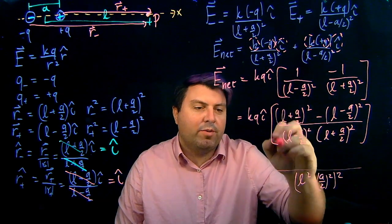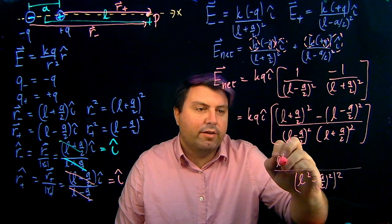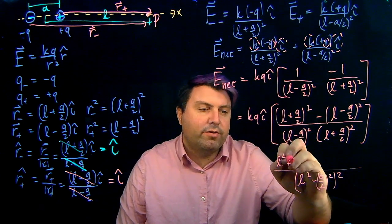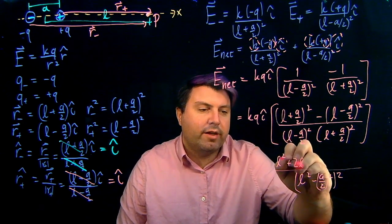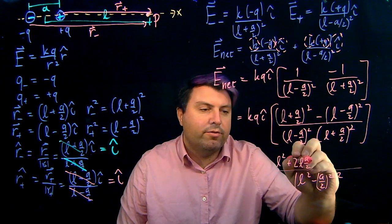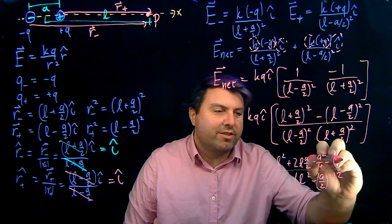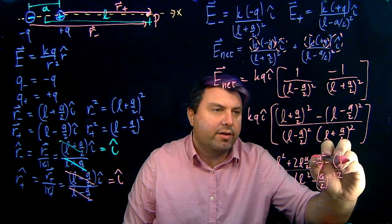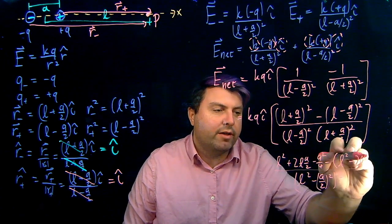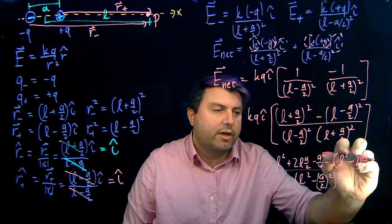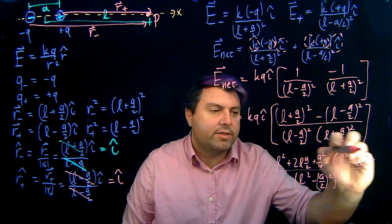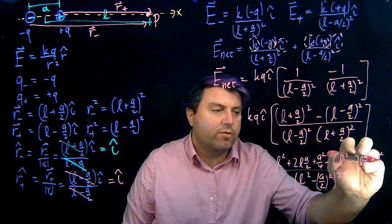Okay, foiling up here is going to be the big part. We have L squared plus 2AL over 2 minus A squared over 4 minus, and we're going to just do all this in the minus, L squared minus 2AL over 2, and then again, sorry, this is plus, plus A squared over 4.